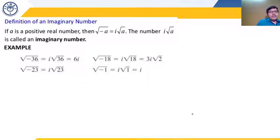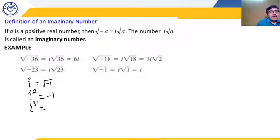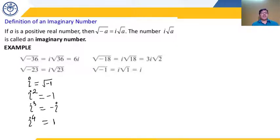Now, i = √(−1), i² = −1, i³ = i² · i = −1 · i = −i, and i⁴ = 1, which equals unity.